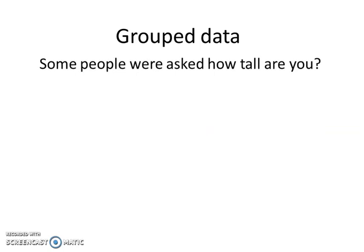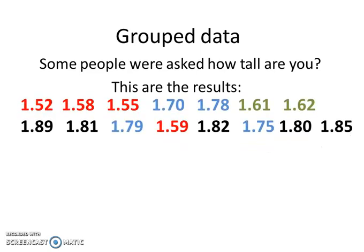In this video we're going to see some grouped data. What happens here is that if you ask some people how tall are you and you get these results, you see that people have very common numbers, very similar numbers in heights. Some people were around 150, some people were around 160 something. So to understand this data better, what you can do is create intervals and group the numbers into intervals, those numbers that you consider similar. In an exercise, the size of the interval will be given.